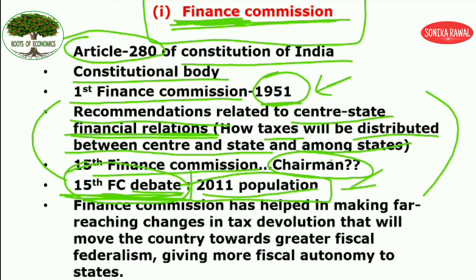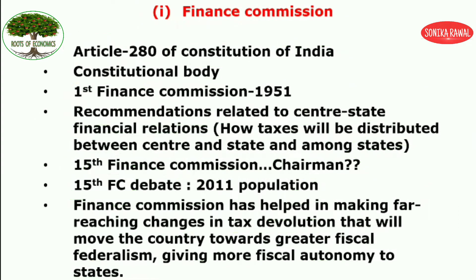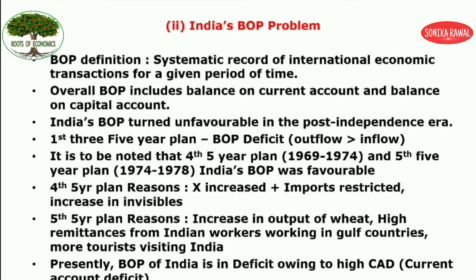You can mention this debate briefly in your answer. Then give a conclusion stating that the Finance Commission has helped in making far-reaching changes in tax devolution — the distribution of tax from center to state — which moves the country towards greater fiscal federalism, giving more fiscal autonomy to states so they can utilize their funds independently.